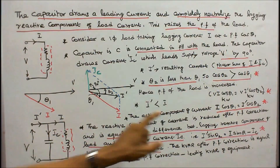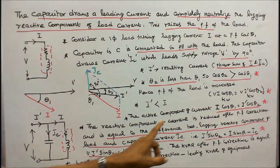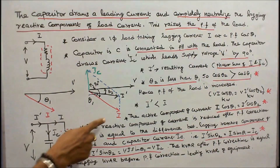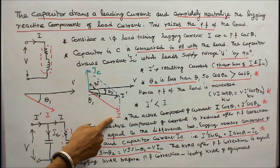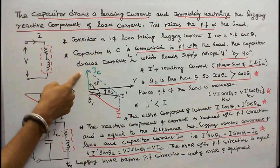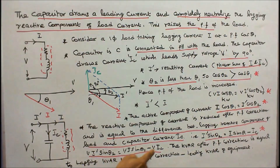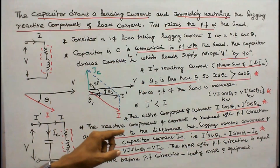The reactive component of current is reduced after power factor correction, and is equal to the difference between the lagging reactive component of the load and the capacitor current Ic. That is, I dash sin theta 2 equals I sin theta 1 minus Ic. Multiplying both sides by V: V I dash sin theta 2 equals V I sin theta 1 minus V Ic. Therefore, the KVAR after power factor correction equals the lagging KVAR before power factor correction minus the leading KVAR of the equipment.